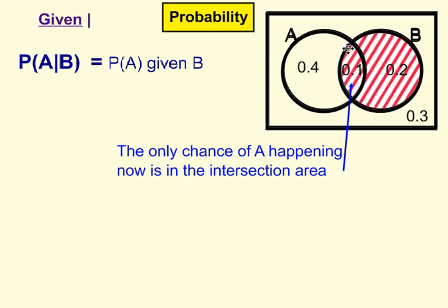We look at the 'given' sign, then look after it at B — we highlight that in, then look forward at A. We realize that the only part of A that is in this intersection area is the only part that can happen.